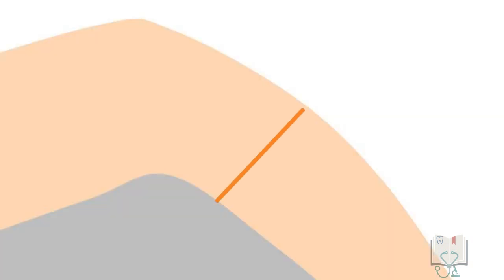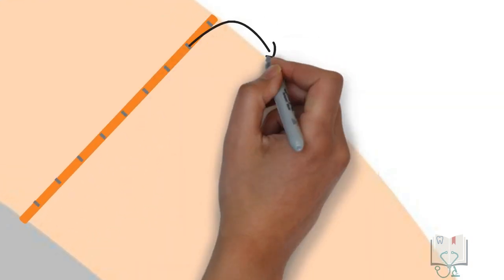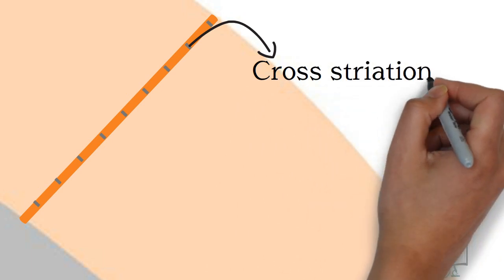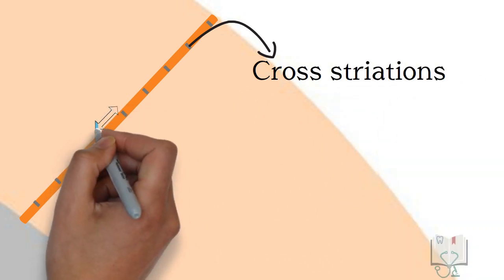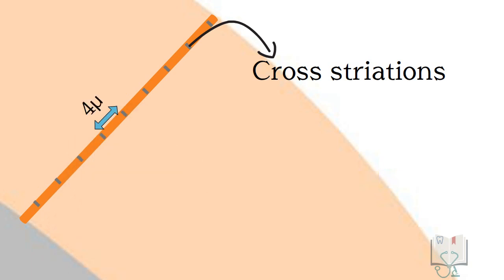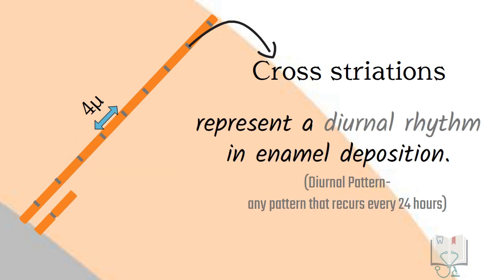Cross striations, in the longitudinal section of enamel rods, appear as dark and light bands running perpendicular to the long axis of individual enamel rods. They are about 4 microns wide. These striations represent a diurnal rhythm in enamel deposition.